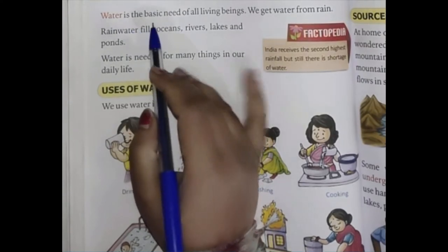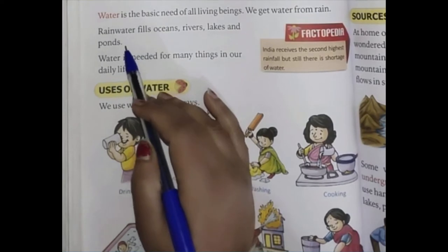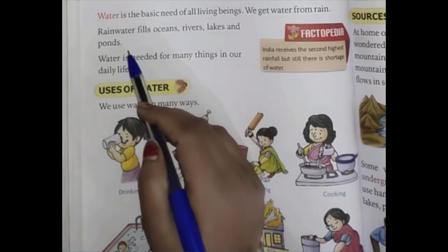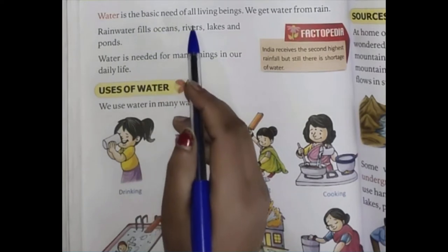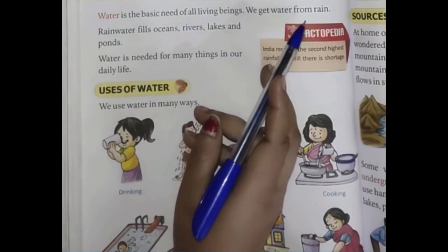Water is the basic need of all living beings. We get water from rain. Rainwater fills oceans, rivers, lakes and ponds. Water is very important for living beings.